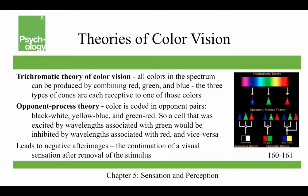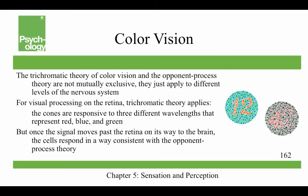Opponent processing leads to negative afterimages — the continuation of a visual sensation after the removal of a stimulus. You stare at a figure that doesn't look right, then look at a whiteboard and suddenly see an American flag. The trichromatic theory and the opponent process theory are not mutually exclusive — they apply to different levels of the nervous system. For visual processing on the retina, the trichromatic theory applies; cones are responsive to three wavelengths representing red, blue, and green. But once the signal moves past the retina toward the brain, cells respond in a way consistent with the opponent process theory.